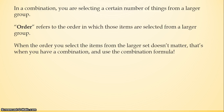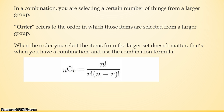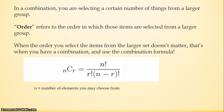Before I go to the example, I want you to know that when your teachers say or when I say 'order doesn't matter,' that simply means that the order in which you select items from the larger group doesn't matter. This is the formula for a combination. N is the number of elements you can choose from, and R is the number of elements you need.